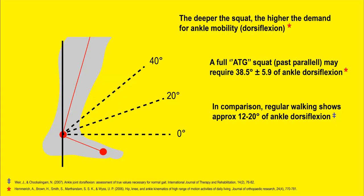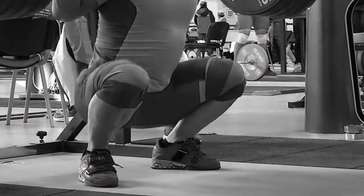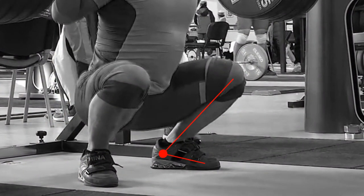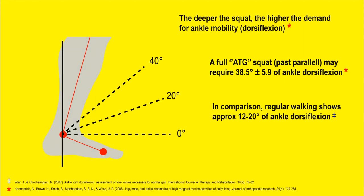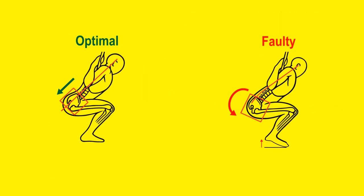If you have mobility restrictions in the ankles, other structures in the body will start to compensate. Regular walking requires about 12–20 degrees of ankle dorsiflexion, so you may still be able to squat to the bottom with limited ankle mobility — but your pelvis is going to tilt and your back is going to round. That is not a long-term solution. You don't want other structures compensating for one mobility issue.